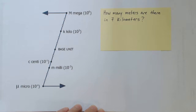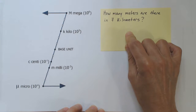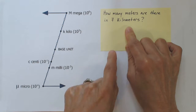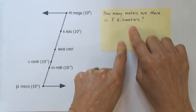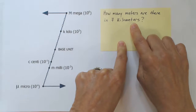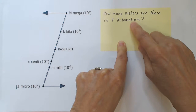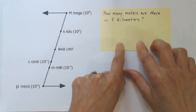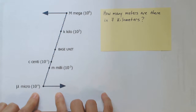We'll often need to convert between one type of unit in the SI system and another. Here's an example problem asking how many meters there are in 7 kilometers. This might seem like we're converting from meters to kilometers because the word meters comes first in the problem statement. However, we have to interpret this as: we're given kilometers and asked to find meters — so we're going from kilometers to meters. This is where this chart will come in handy.